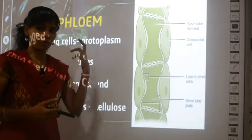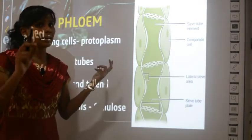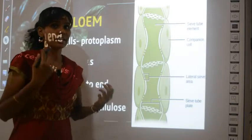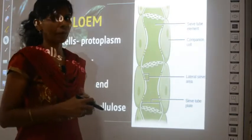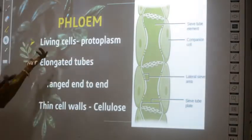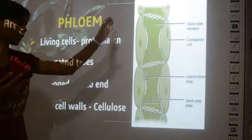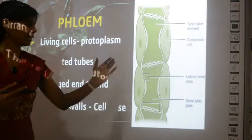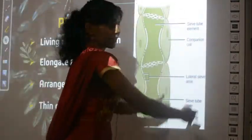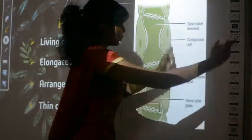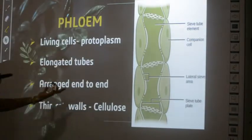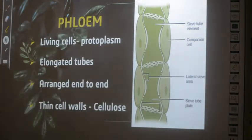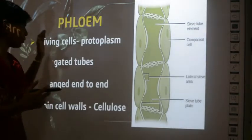To summarize phloem's structure: phloem cells are living and have protoplasm. Like xylem they are elongated tubes arranged end to end. The cell wall is made of cellulose. Next we will look at the elements of phloem — what phloem is made up of.